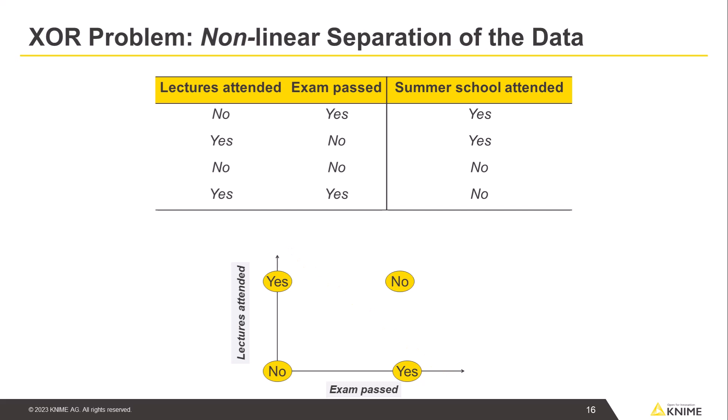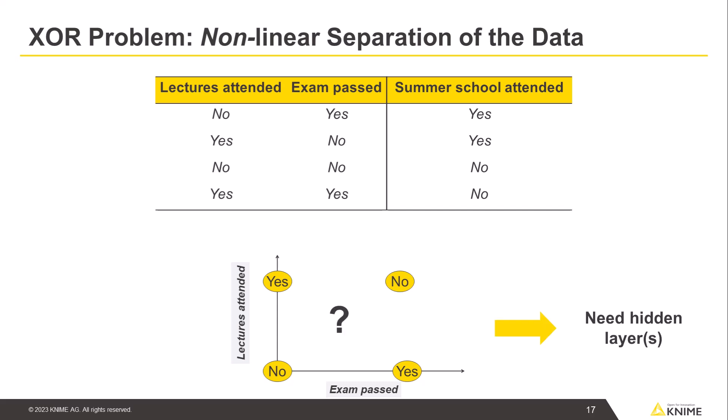Let's now separate the same data into two classes nonlinearly. Students still attended the summer school if they didn't join the lectures or failed the exam. This time, however, if they did both — that is, they didn't join the lectures and failed the exam — they did not attend the summer school. Now the class 'no' is represented in two corners of the feature space and can't be separated from the class 'yes' by a single straight line. This is an example of an XOR problem which requires nonlinear separation of the data. We could only solve this kind of problem with multiple perceptrons, so with a hidden layer in our network architecture.